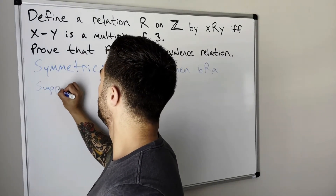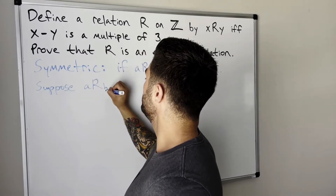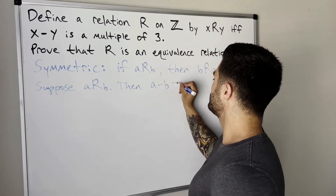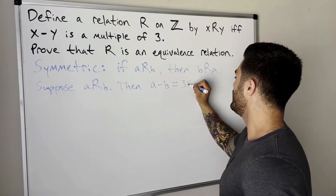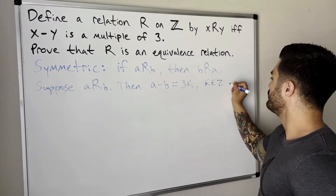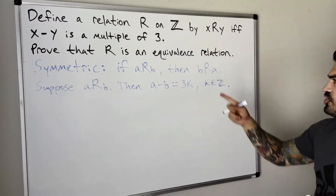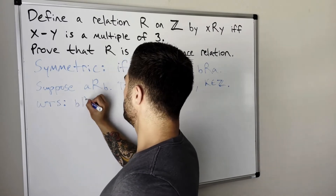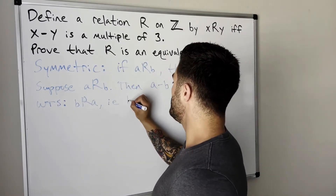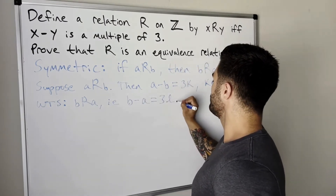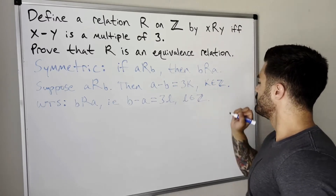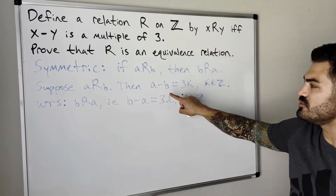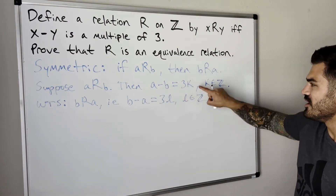So we're going to assume that a is related to b. Suppose a is related to b. What exactly does that mean? That means that a minus b is a multiple of three, so a minus b equals 3k, where k is some integer. We want to show that b is related to a — in other words, that b minus a is a multiple of three, meaning b minus a equals three times l, where l is some integer.